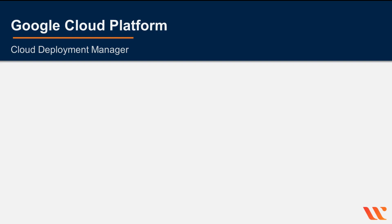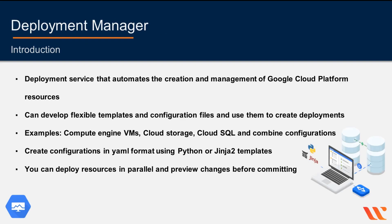We'll explore the Cloud Deployment Manager. Google Cloud Deployment Manager allows you to deploy resources by using a configuration file. You can specify all the resources needed for your application in a declarative format using YAML. If you need to combine different resources across different GCP products and services, you can use templates to mix and match resource configurations. These templates can be parameterized and written in either Python or Jinja 2.